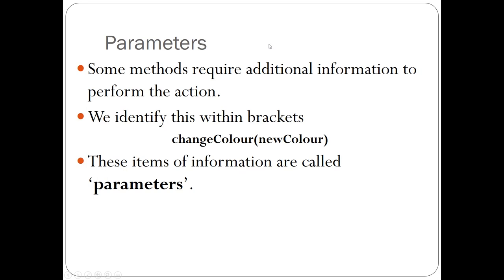Some of the methods we used needed a little bit more information in order to make them work. One of the examples we looked at was changeColor — we had to provide information to the method by filling in a dialog box. When I changed the circle from blue to red, I had to provide the word 'red' as a piece of information for the newColor parameter. That's an example of what we call a parameter. You've probably used parameters in other programming languages before, and it's no different in the Java programming language.